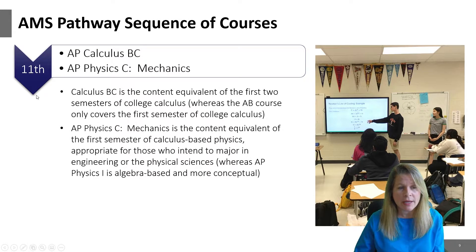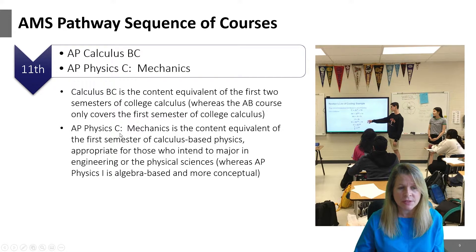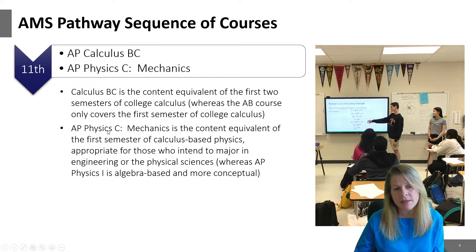Looking at the courses you'd take in eleventh grade: it's AP Calculus BC, which is the most rigorous single-variable calculus course we offer at Walton. It is the content equivalent of the first two semesters of college calculus. To complement that, you'll be taking AP Physics C — the mechanics course — which is the content equivalent of the first semester of calculus-based college physics. This would be appropriate for those who intend to major in engineering or the physical sciences. To take AP Physics C, you have to be concurrently enrolled in calculus or have already completed it, so it's a nice complement for the eleventh grade year.